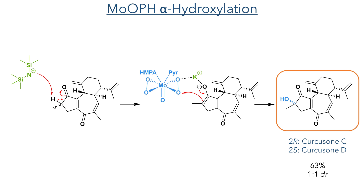From the mixture of Quercusones A and B, the authors could also synthesise Quercusones C and D using a molybdenum-promoted alpha-hydroxylation. Deprotonation of the alpha proton using KHMDS forms an enolate which reacts with oxodiperoxymolybdenum-pyridine-hexamethylphosphoric triamide, installing a hydroxyl group and forming Quercusones C and D in a 63% yield in a 1 to 1 diastereomeric ratio.